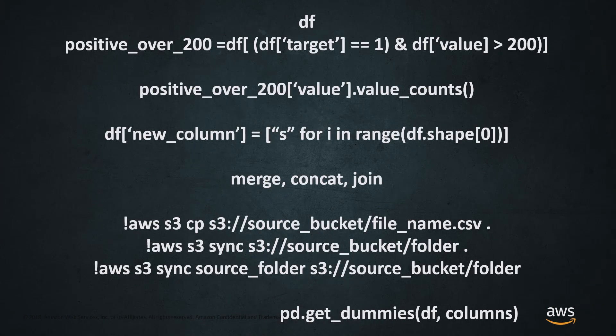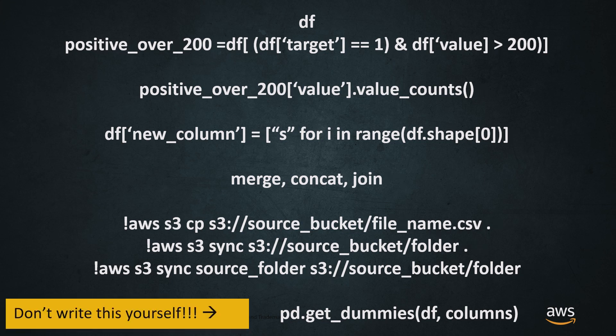Some other common techniques - if you need to extract data from a data frame, there are queries you can use, whether you're merging, concatting, joining. The AWS CLI is always going to be a helpful go-to. And lastly, for one-hot encoding, please don't write this yourself. I don't want anyone to waste time writing their own one-hot encoder. Just use the one that's built into Pandas.